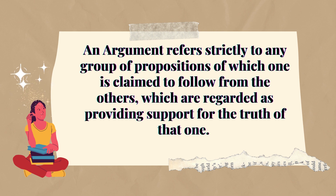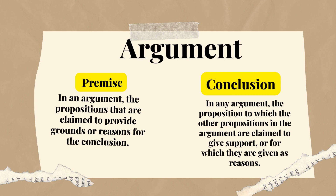A proposition may need two things: first being the premise and the second one is the conclusion. The premise in an argument refers to the propositions that are claimed to provide grounds or reasons for the conclusion — the evidence that leads to the conclusion. The conclusion is the proposition to which the other propositions give support, or for which they are given as the reason.